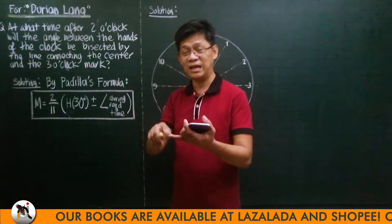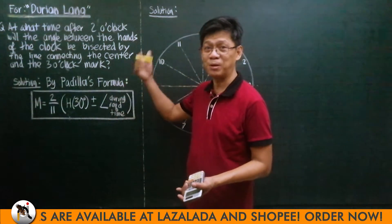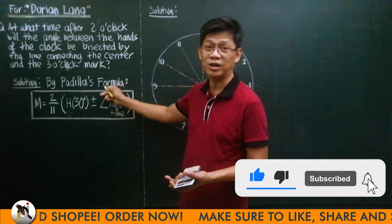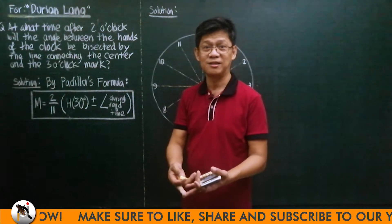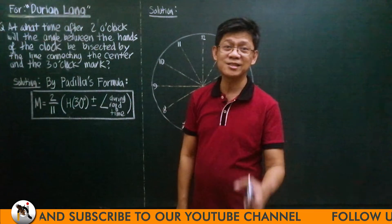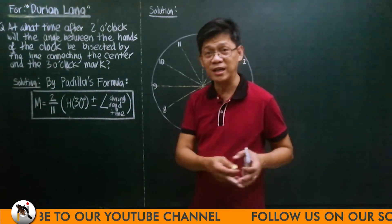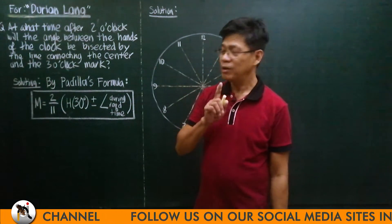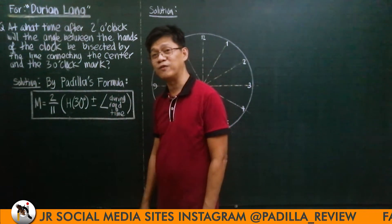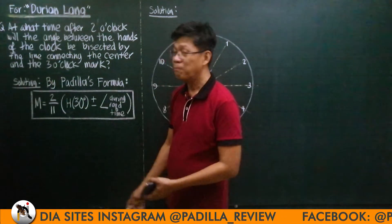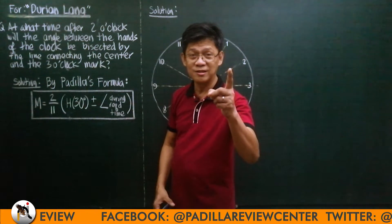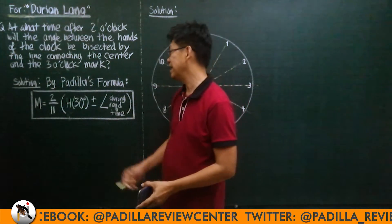I presented the Padilla's formula in the previous post, along with the graphical representation — the Padilla's clock chart. The bookish solution is the one you will find in all textbooks. Now, Padilla's formula is a very fast, very convenient formula in solving clock problems, but I recommend it only if just one unknown is in the equation.